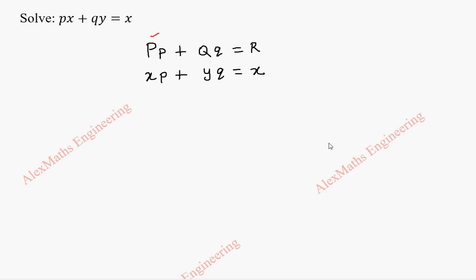By comparison, capital P is x, capital Q is y, capital R is x. So we get P equal to x, Q equal to y, and R equal to x.